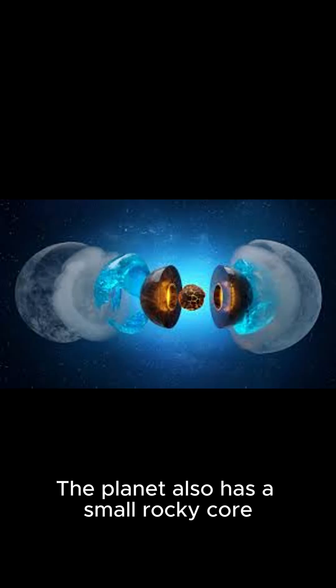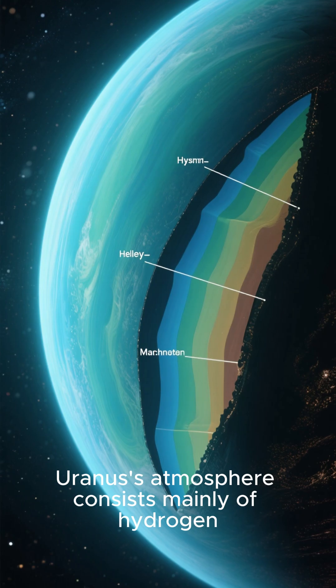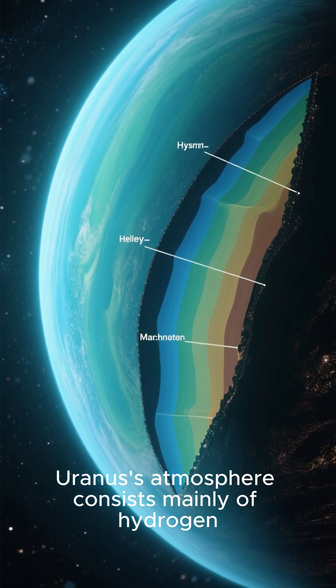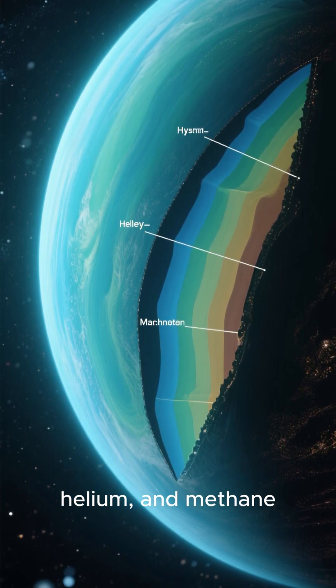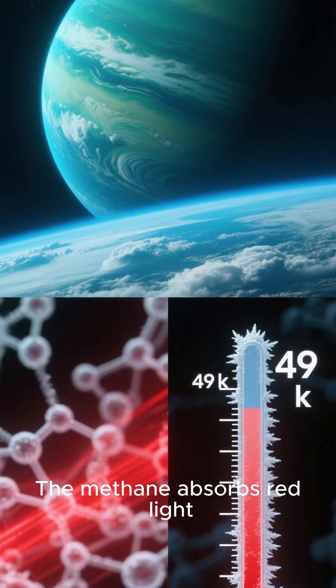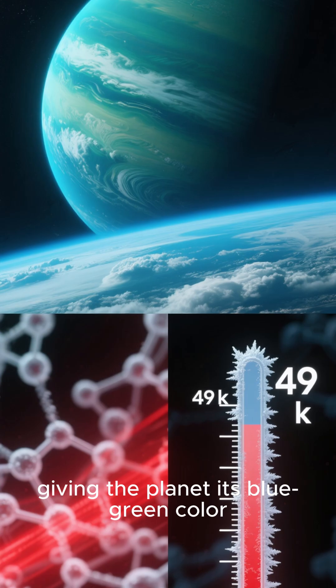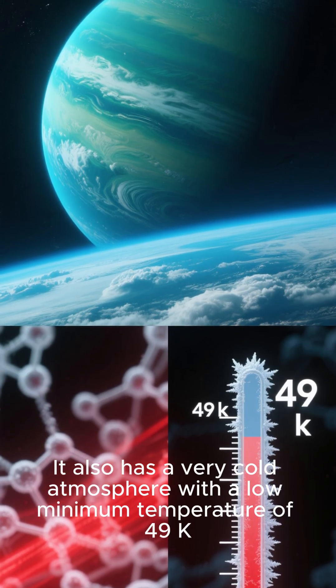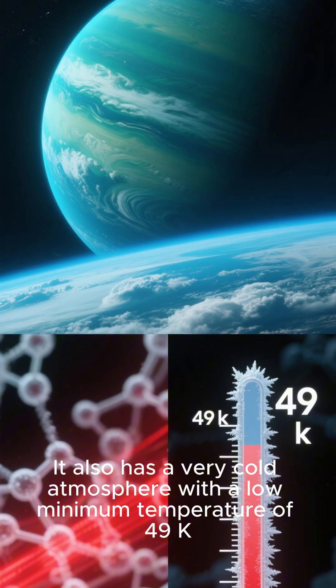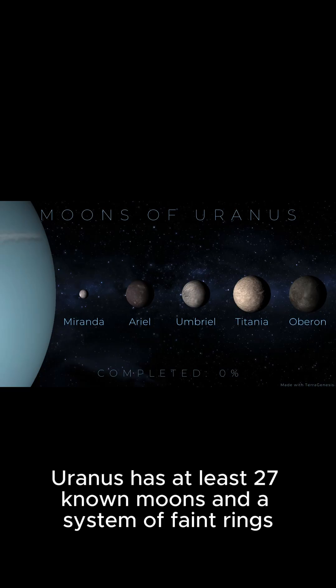Uranus's atmosphere consists mainly of hydrogen, helium, and methane. The methane absorbs red light, giving the planet its blue-green color. It also has a very cold atmosphere with a low minimum temperature of 49 Kelvin.